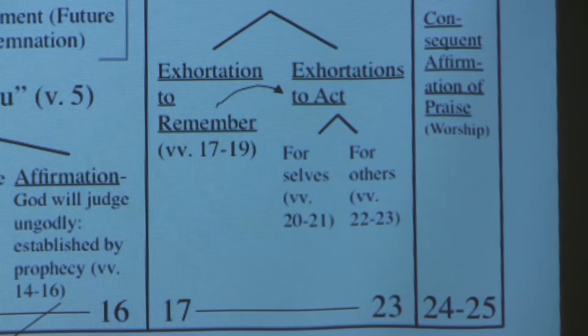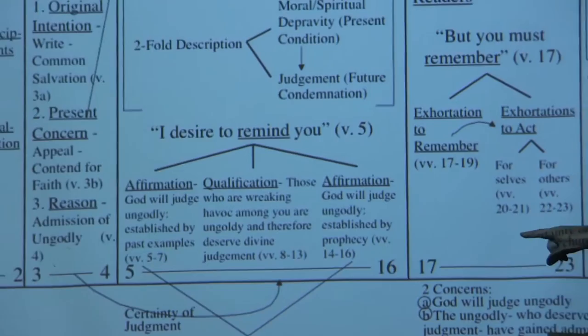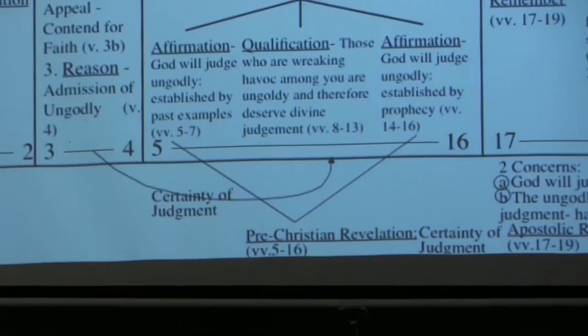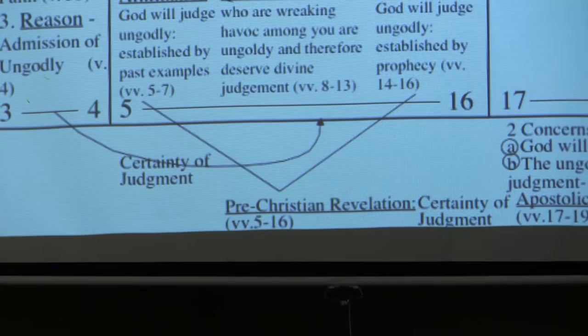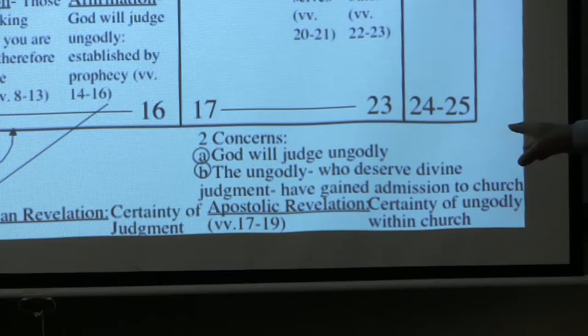Within verses 5 through 16, what is emphasized is the certainty of judgment upon the ungodly. In both verses 5 through 7 and verses 14 through 16, he appeals to pre-Christian revelation to argue for the certainty of judgment. Two concerns: God will judge the ungodly, and the ungodly who deserve divine judgment have gained admission to the church — that's the point he makes especially in verses 8 through 13.